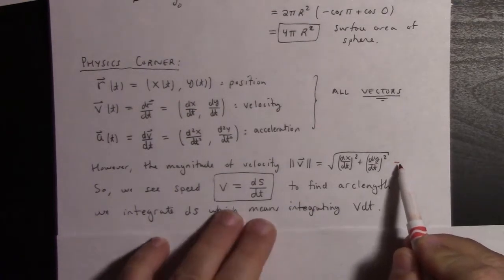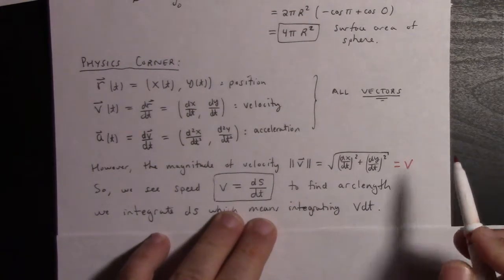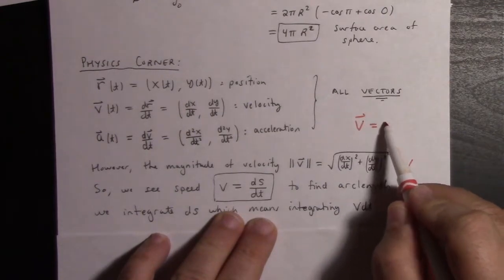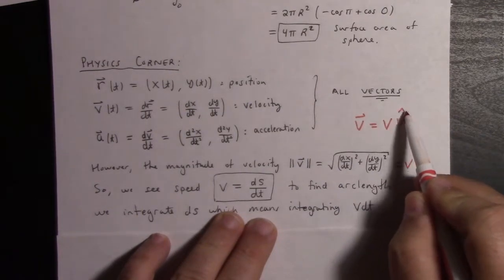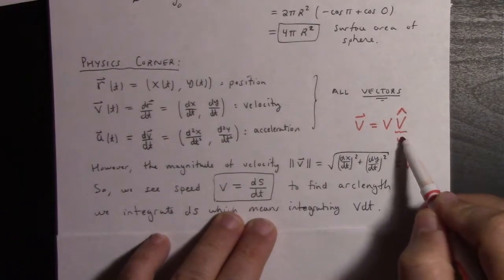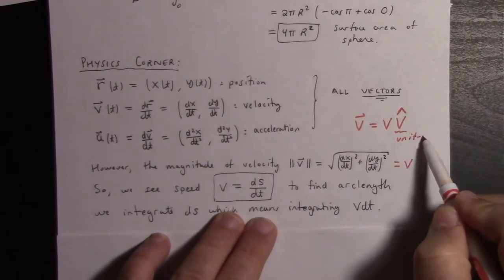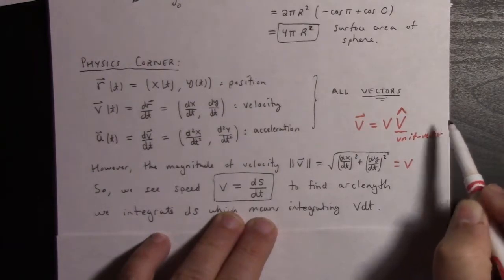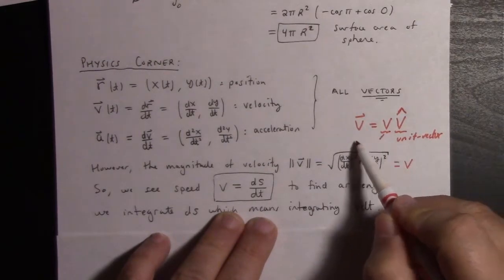This is the usual physics notation. In physics, we like to use the notation v = v v̂. The v̂ is a unit vector, which means a vector of unit length, and this is the magnitude.